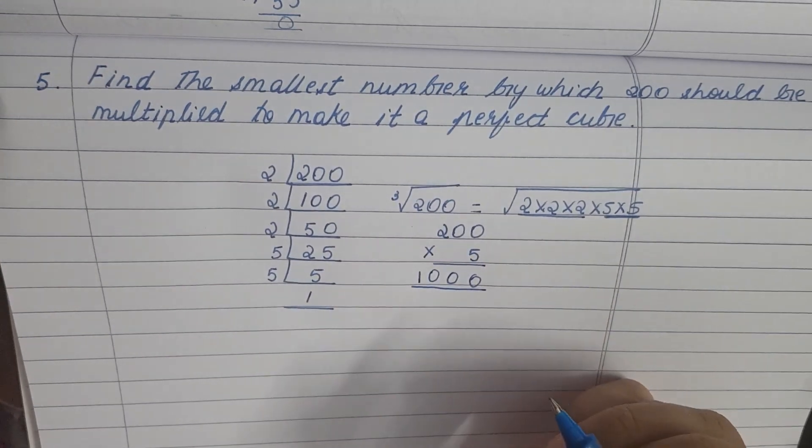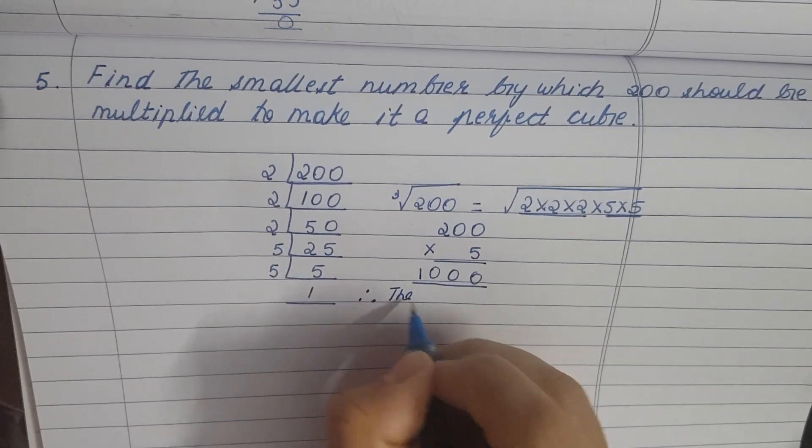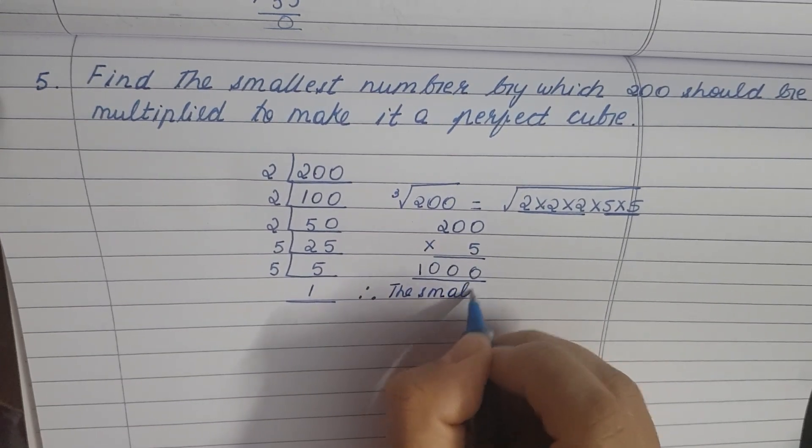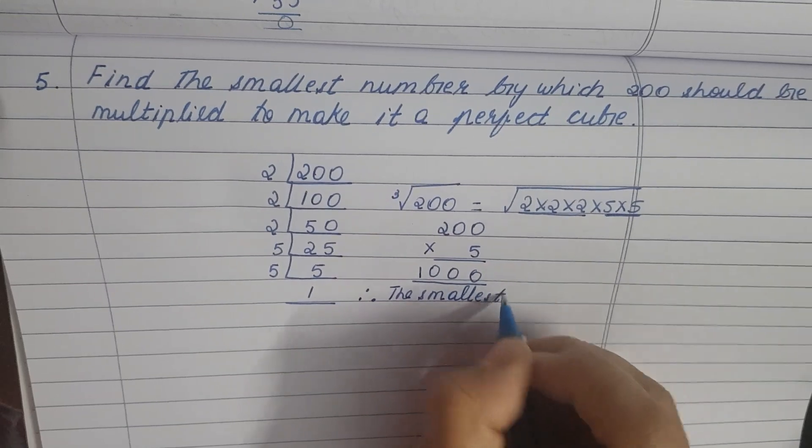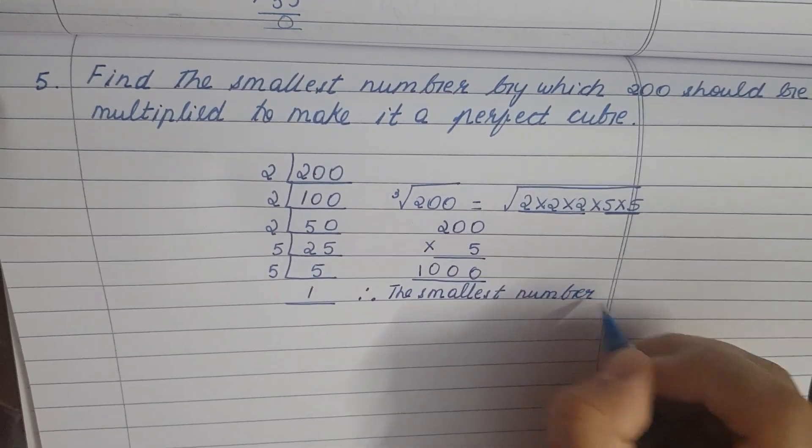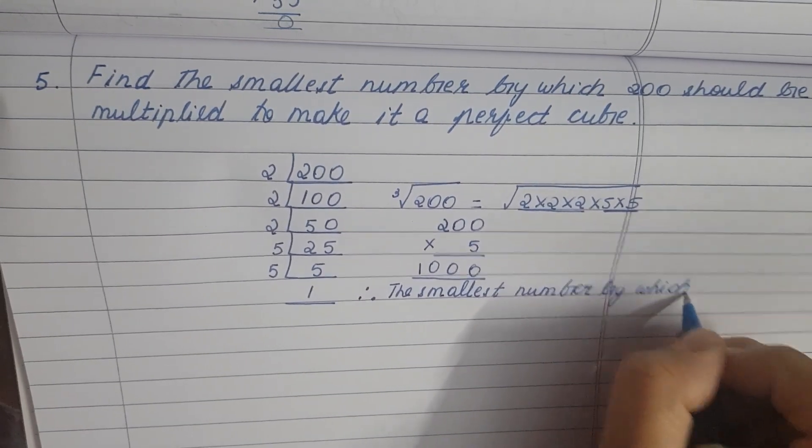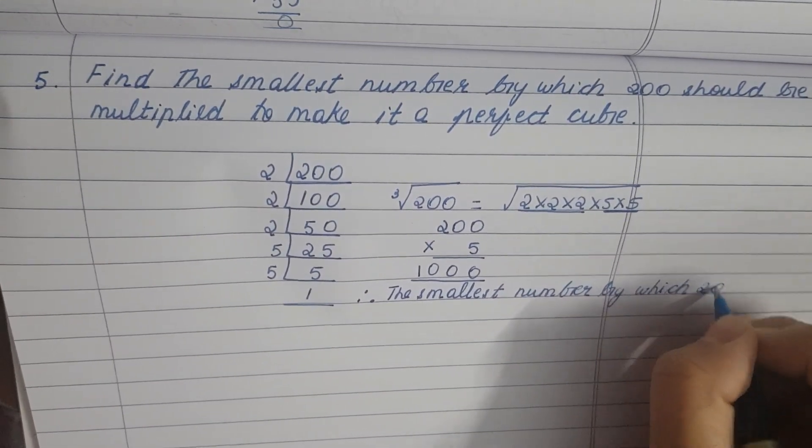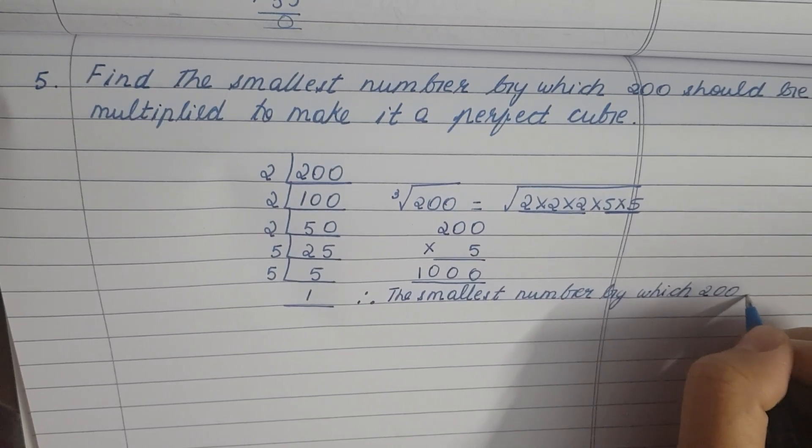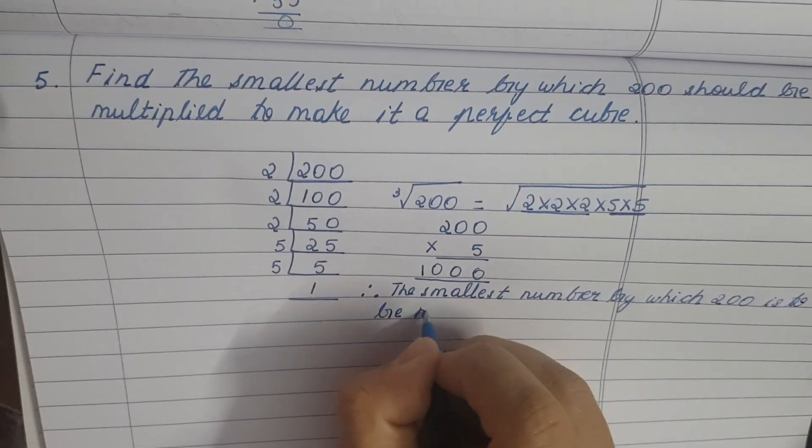It is 1,000. Therefore, the smallest number by which 200 is to be multiplied is 5.